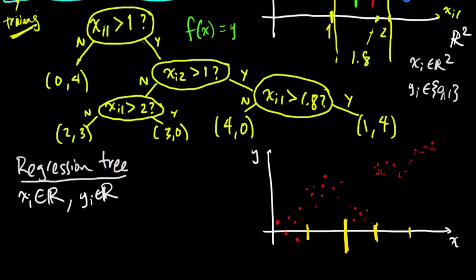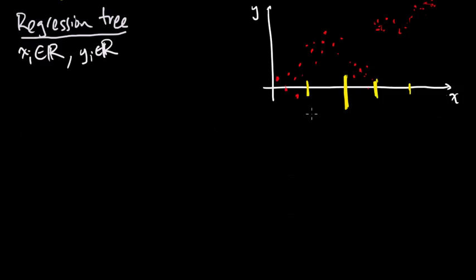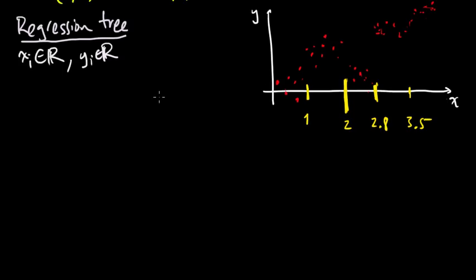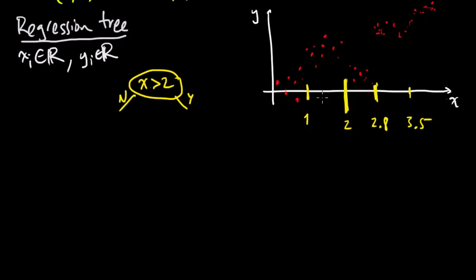So this defines a tree, just like before. The split values are roughly: 1, 2, 2.8, and maybe 3.5 or something. So the tree starts with: is x greater than 2? That was our first split — yes or no. If no, then we have another split: is x greater than 1? Yes or no. Then we take the case when x is less than 1.